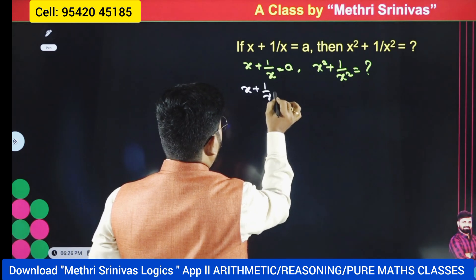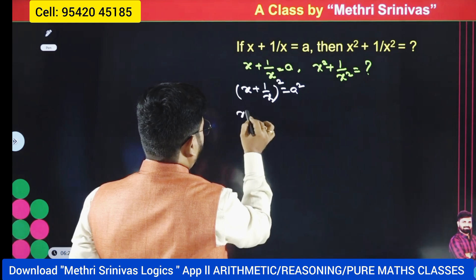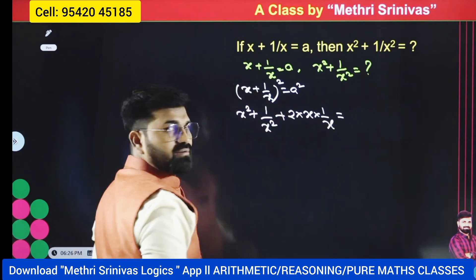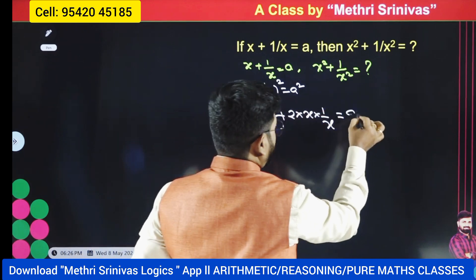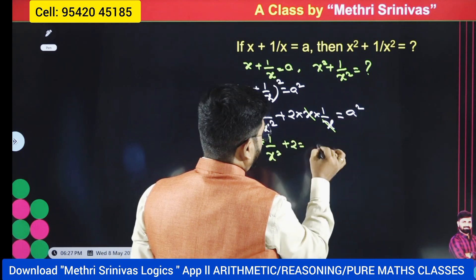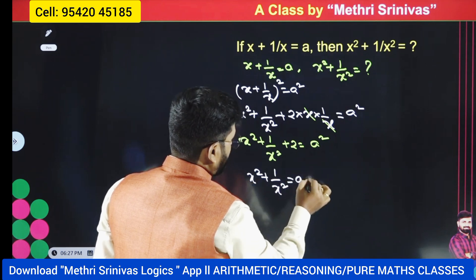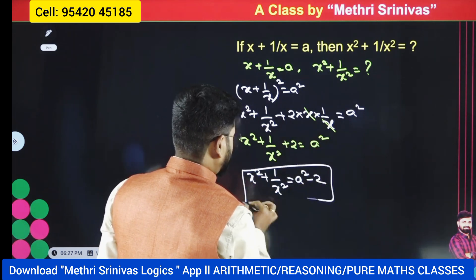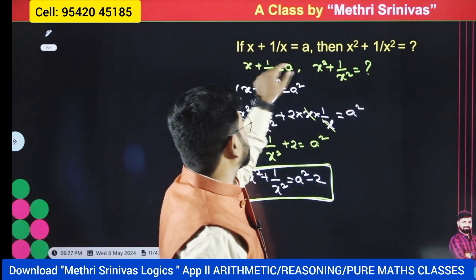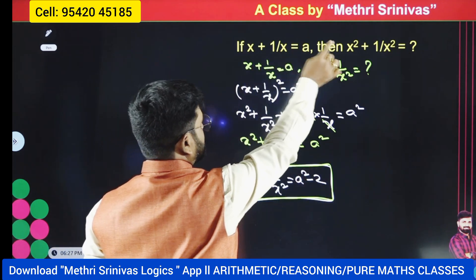First I am doing squaring on both sides. So x plus 1 by x whole square is equal to a squared. Now using (a + b)² = a² + b² + 2ab, we get x² + 1/x² + 2 = a². The x terms cancel. So x squared plus 1 by x squared plus 2 equals a squared, therefore x squared plus 1 by x squared equals a squared minus 2.